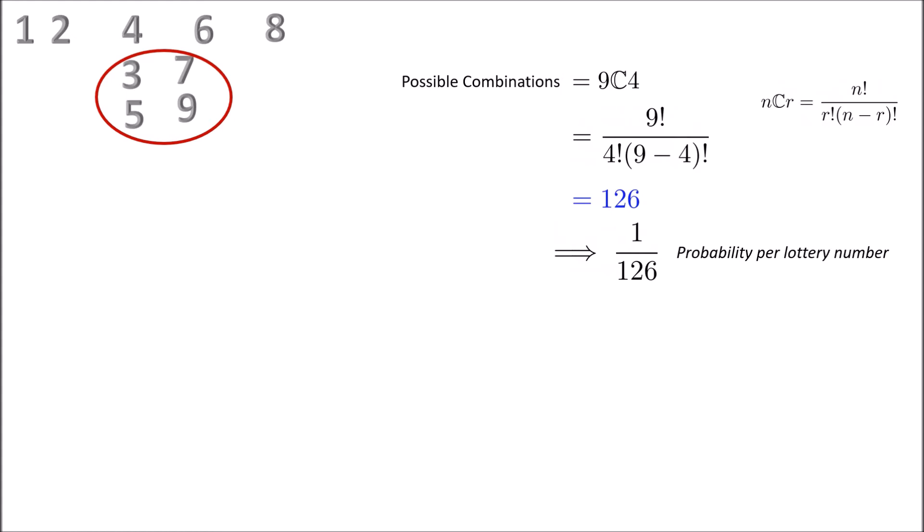Now before we approach the question itself, let's understand what the question is asking us. So as a participant, I choose a four-digit number. I paid a lottery fee to enter this competition, and if my four-digit number matches the lottery number, I win the prize money, but not all of the prize money.